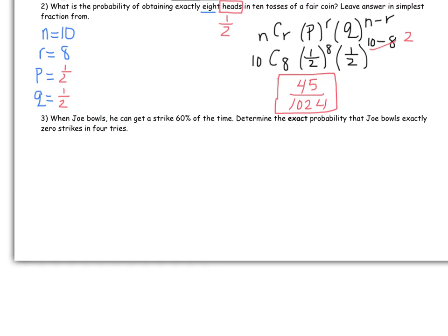Let's try another example. But before we start it, let's just put down what we need. We need an N. We need an R. We need a P. And we need a Q. So what is my N? Well, let's read the problem first. It says, When Joe bowls, he can get a strike 60% of the time. Determine the exact probability that Joe bowls exactly 0 strikes in 4 tries. So what is my N? What is my total number of tries? And you should be telling me 4. He's tried to bowl 4 times. And what is my R? What is the number out of 4 that you want him to get? Well, it says, What is the probability that Joe bowls exactly 0 strikes? So R is 0.